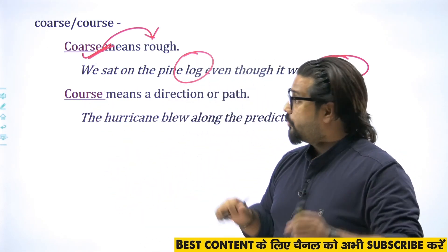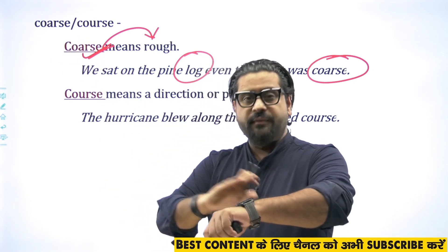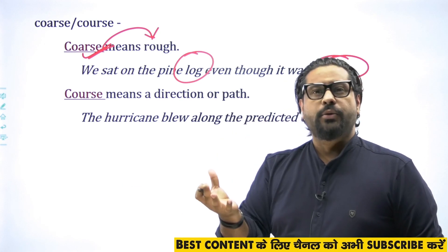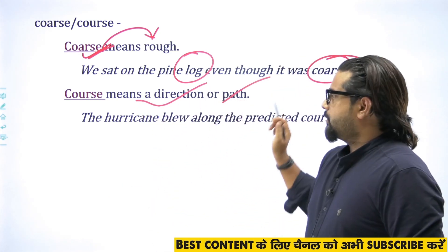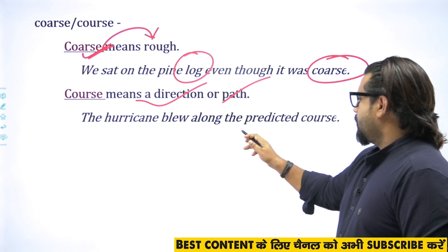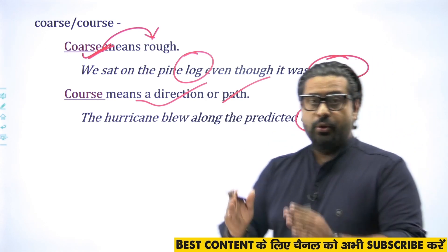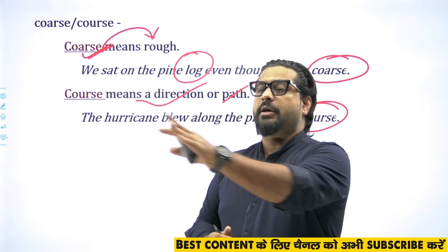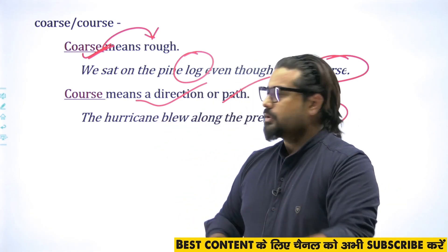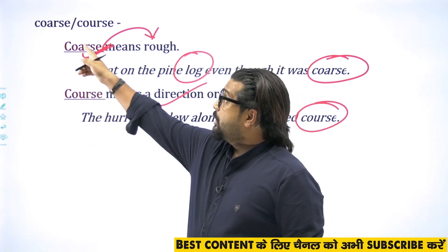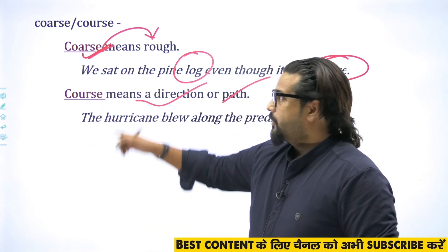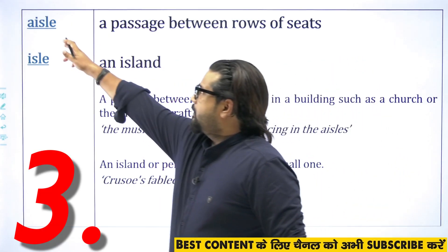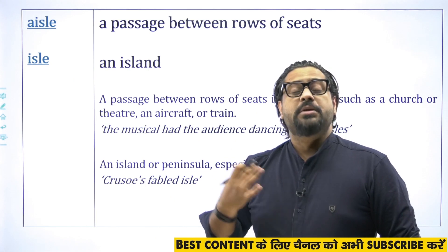Be careful with this pairing — it can be confusing. 'Coarse' (C-O-A-R-S-E) means rough. 'Course' (C-O-U-R-S-E) means a course of action — a direction or a path. For example: 'The hurricane will move along the predicted course' — meaning the path or direction. This is a very important difference.